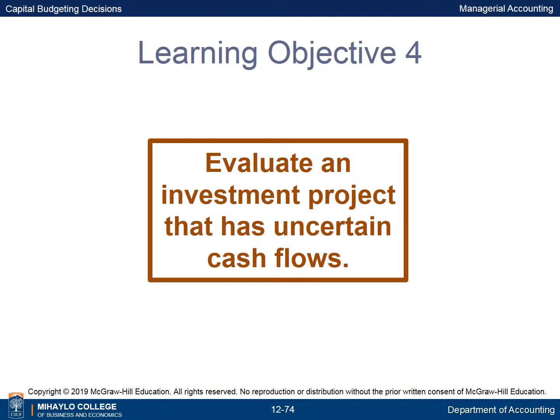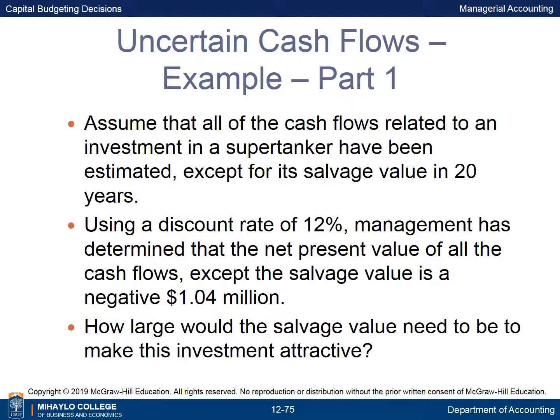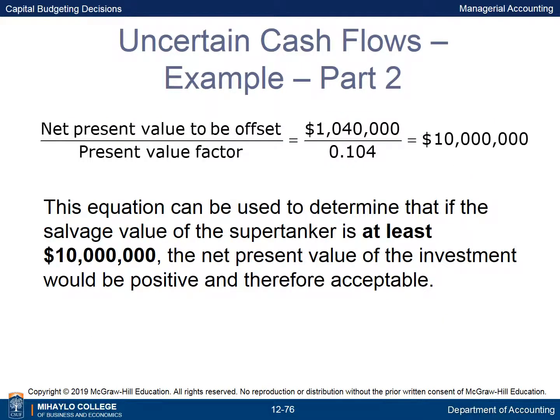Learning Objective 4 is to evaluate an investment project that has uncertain cash flows. Assume all cash flows related to an investment in a supertanker have been estimated except its salvage value in 20 years. Using a 12% discount rate, the NPV of all other cash flows is negative $1.04 million. Using the equation: $1,040,000 divided by the present value factor of 0.104, the salvage value must be at least $10 million for the NPV to be positive and the investment acceptable.